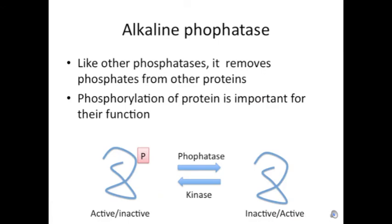In this practical we are going to look at alkaline phosphatase. This is an enzyme that removes a phosphate from other proteins. The opposite reaction is done by kinase proteins, which add phosphates to proteins. This process is important because it can activate or inactivate certain proteins.